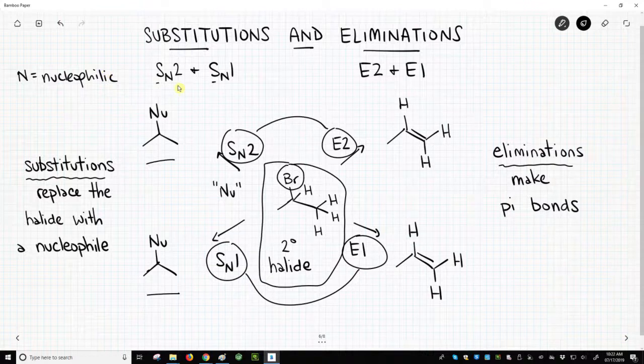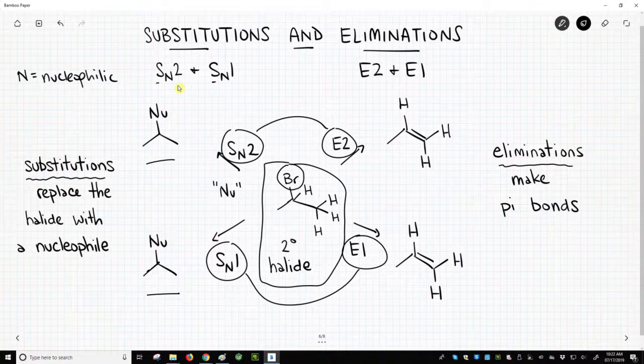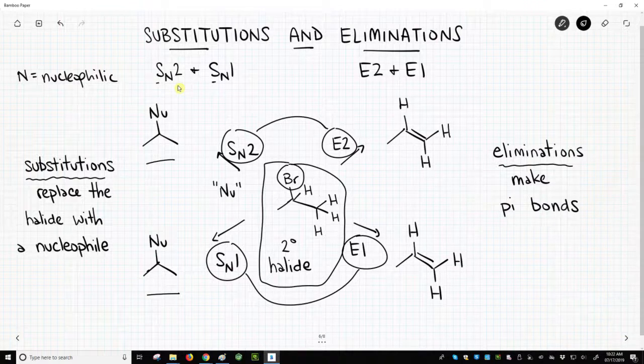The number stands for – and it's kind of a detail – it's the order of the reaction, the number of chemical species that come together in the rate-determining step.